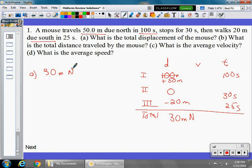For B, it says: what is the total distance traveled by the mouse? Now again, distance is not a vector quantity. So we're not going to look at the positives and the negatives. I have a positive 50, which was the due north, and a negative 20, which was the due south. We're not going to look at the positive and negative. We're just going to add those up.